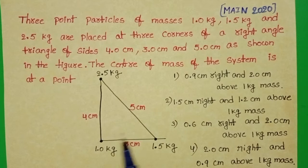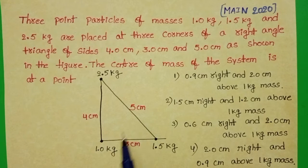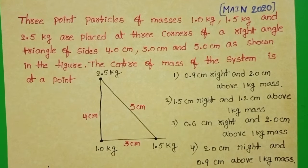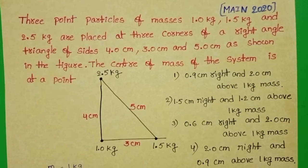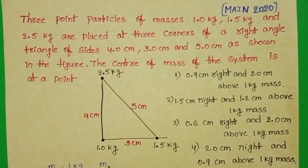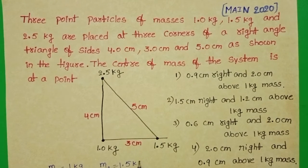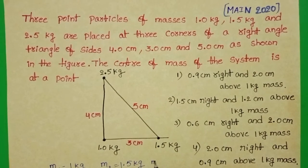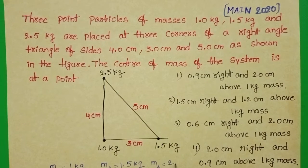Three particles arranged at three corners of a right angle triangle. Mass of the first particle is 1 kg and second particle 1.5 kg. Mass of the third particle is 2.5 kg.